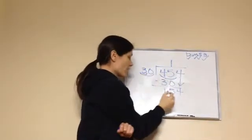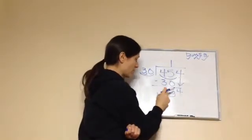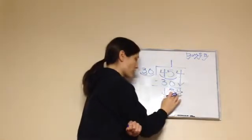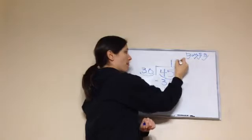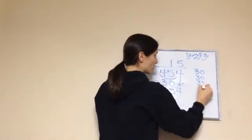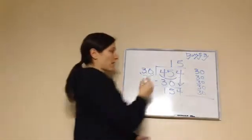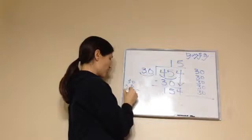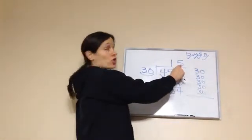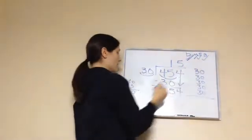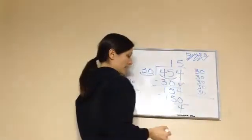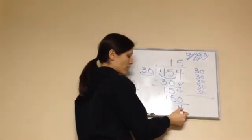Let's do the trick again. Will 3 go into 1? No. So let's use 15 as our starter. 3 goes into 15 how many times? 5. So that's our trick number. 30 times 5 — let's see: 30 plus 30 plus 30 plus 30 plus 30, that's 5 of them, equals 150. Did I go over? No. Could we add another 30? No. So 5 is the right number. 30 times 5 equals 150. Now subtract: we get 4, and nothing else to bring down. Remainder 4.